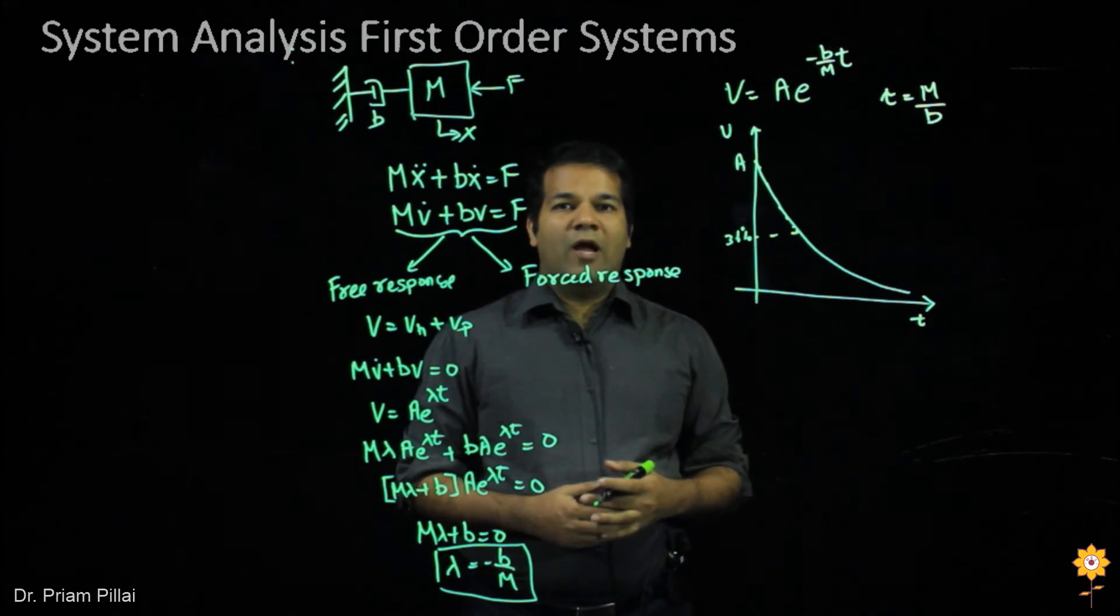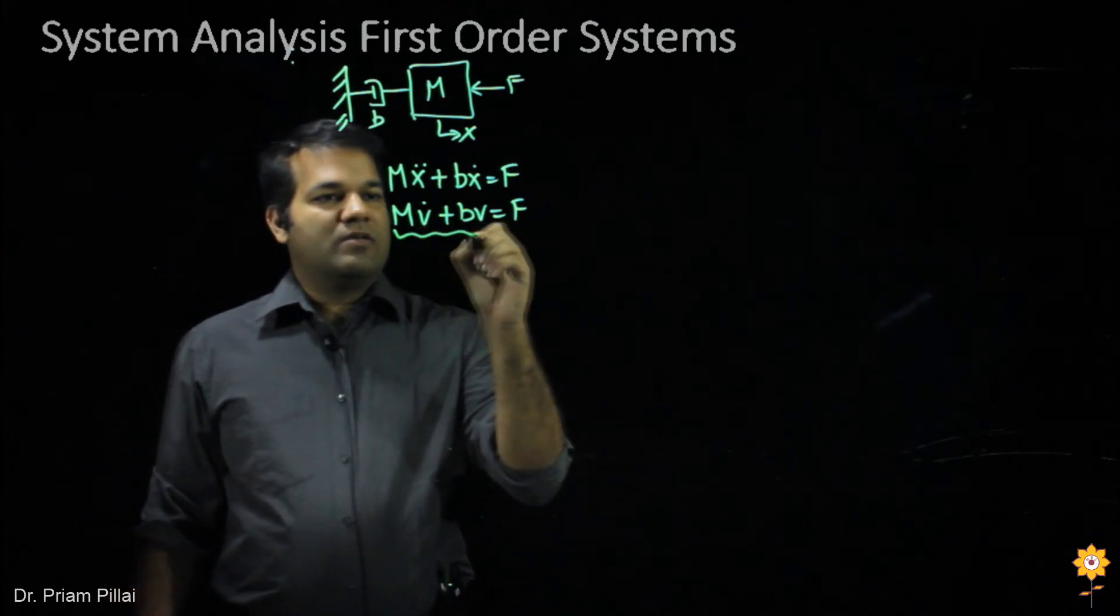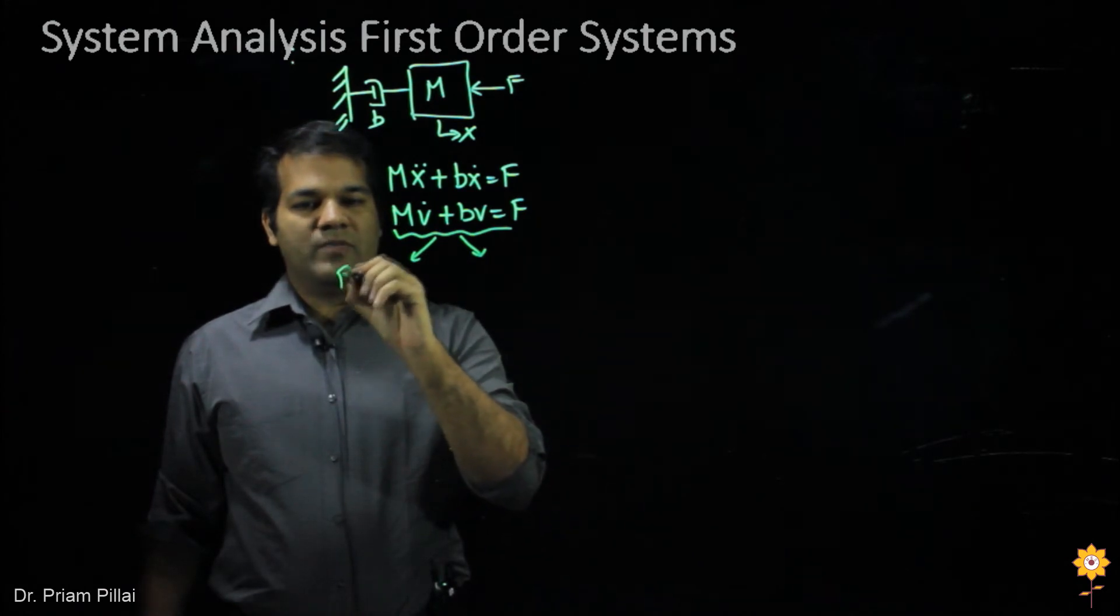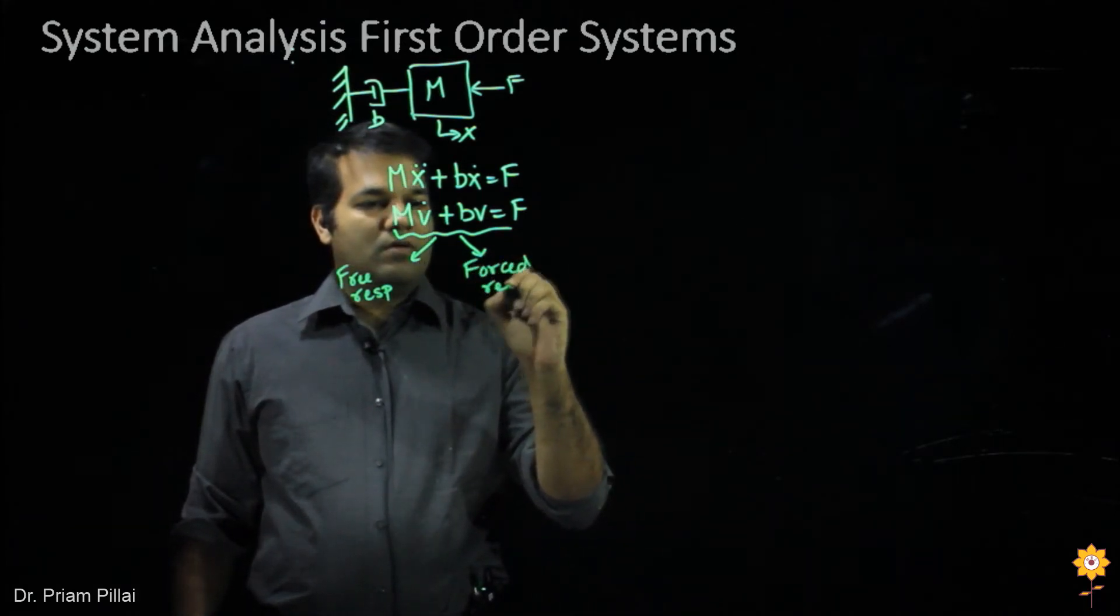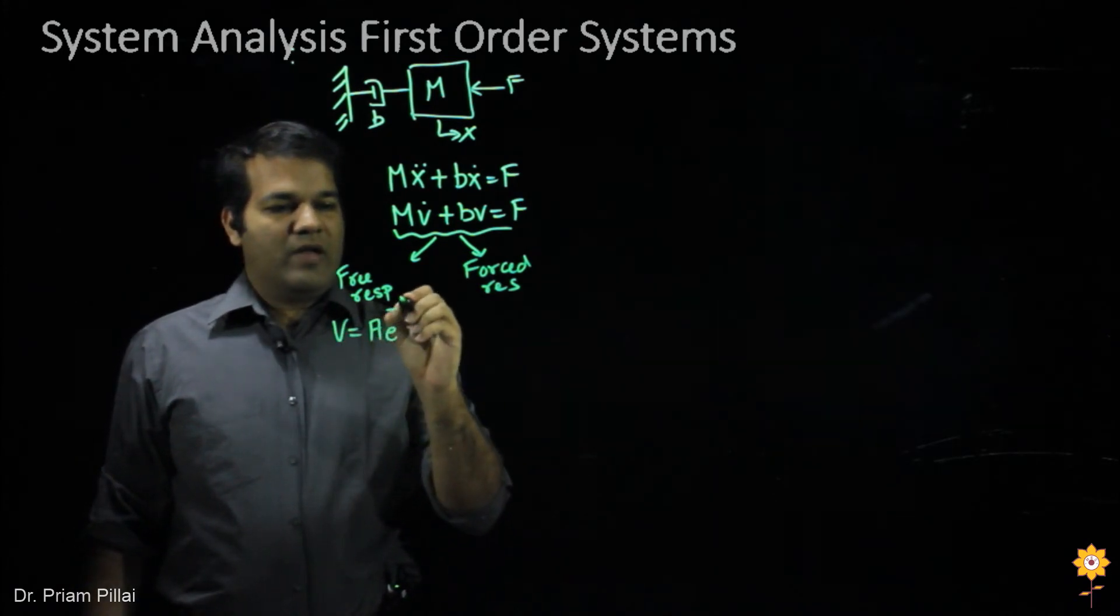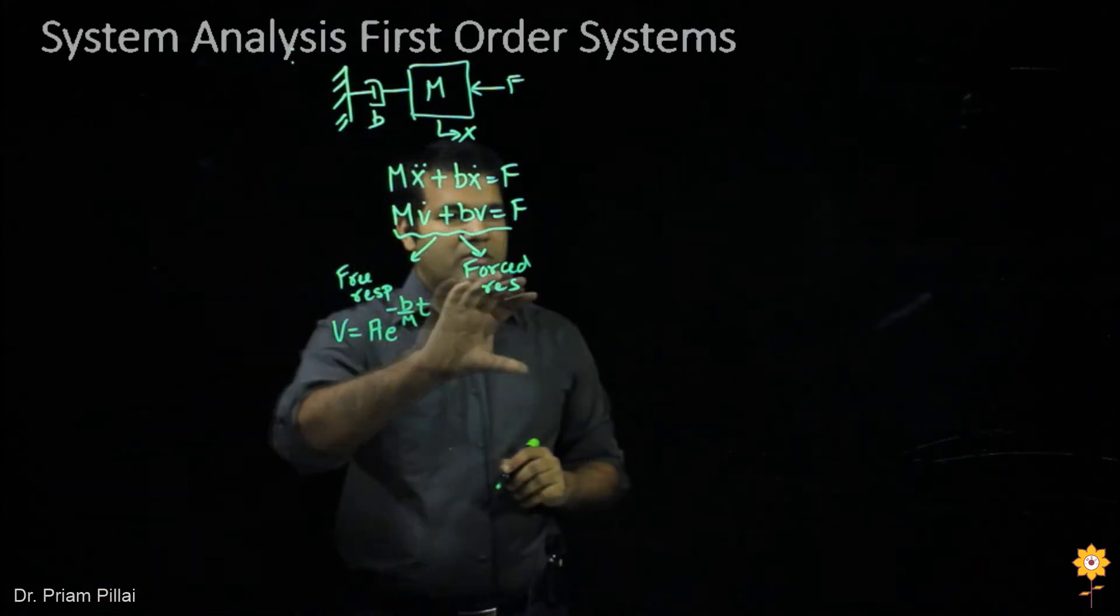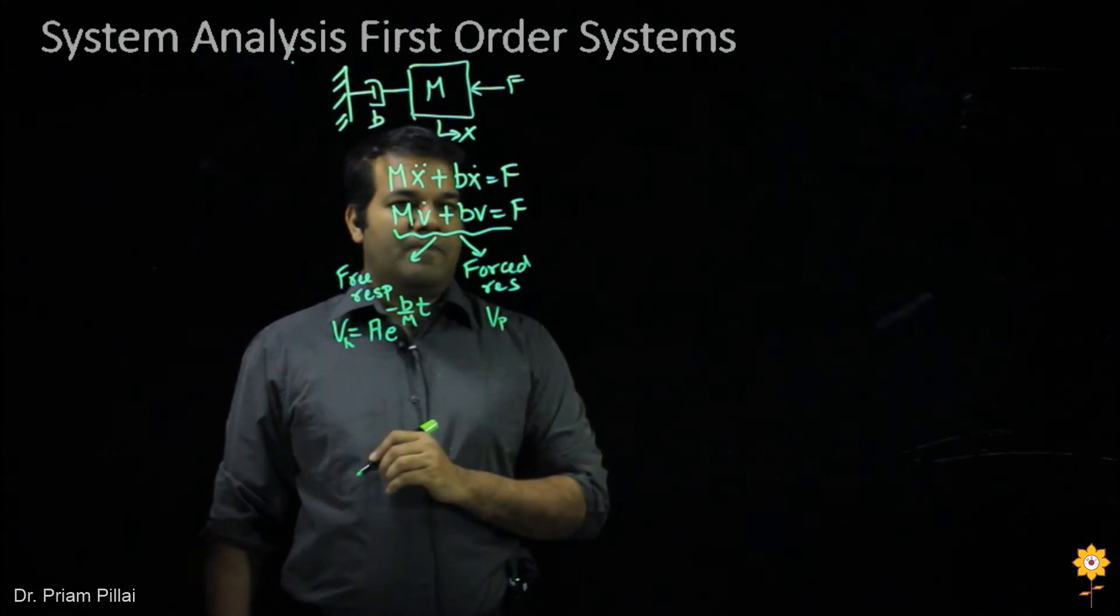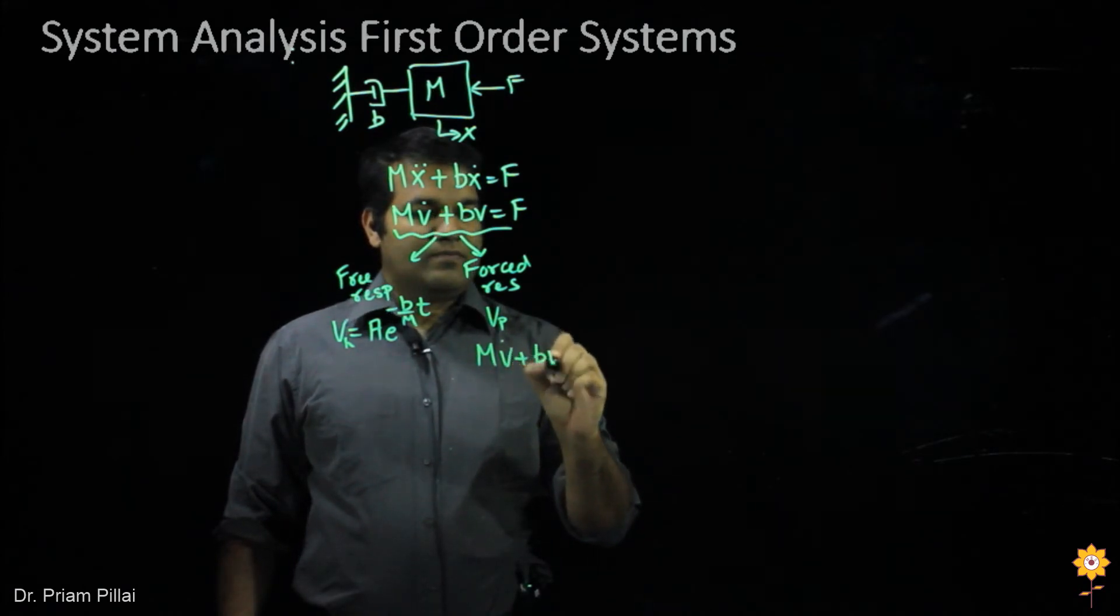So this is a solution of the unforced system where we don't apply an input force. Let's take a look now at what would happen if we have an input force. As we saw earlier, this equation will have two parts: the unforced part or free response, and the forced response. The free response has a solution that looked like v equals ae to the minus b over m times t. Now the forced response, I'll label as vh here, would be vp.